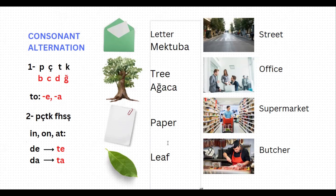Another word here: 'paper,' which is 'kağıt' in Turkish. If you want to say 'to the paper,' it will be 'kağıt-a.' But this word is ending with t, which is one of peçeteğe, so it will alternate to d, and it will be 'kağıda.' So 'to the paper' is 'kağıda' in Turkish.